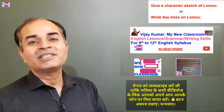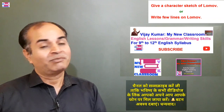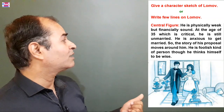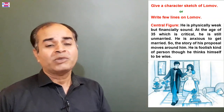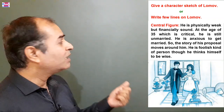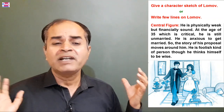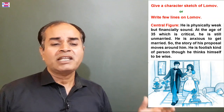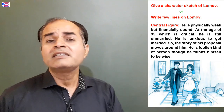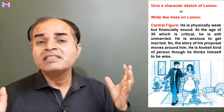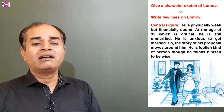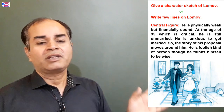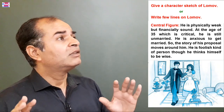So, what do you know about Lomov? Lomov is the central character — the central figure. Write that down as point number one. He is physically weak but financially he is sound. At the age of 35, which is critical, he is still unmarried. He is anxious to get married. The story of his proposal moves around him.